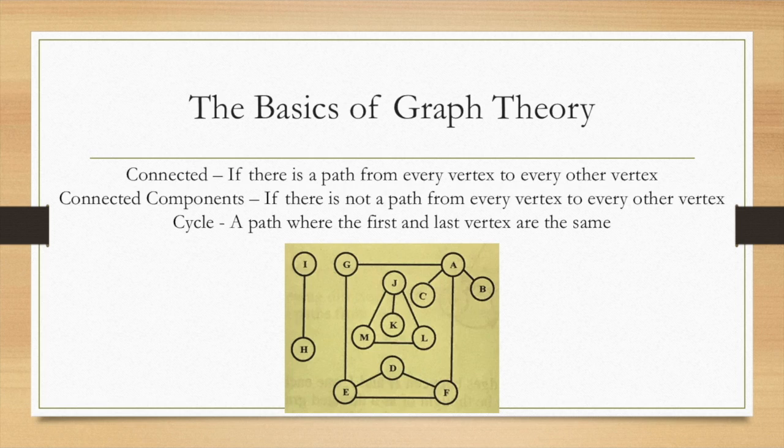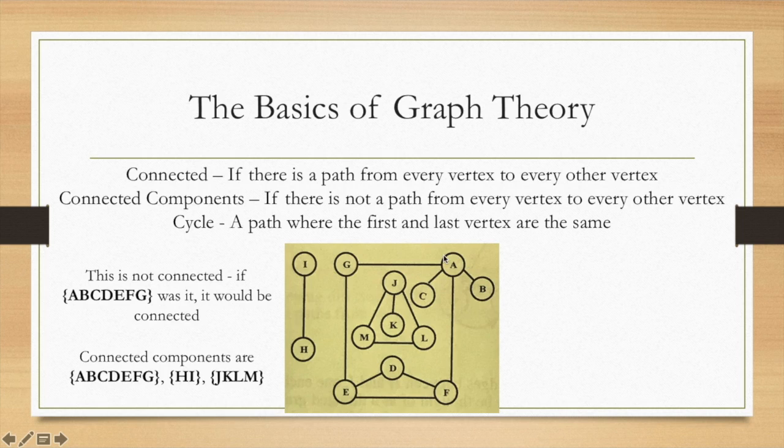Now on to connectedness and cycles. This is not considered connected, which means there's a path from every vertex to every other vertex. Say you covered up j k l m and h i and all you had was this a b c d e f g structure. Then that would be a connected graph. However this is called connected components because there are different components and they are connected but they're not all connected together. Lastly we have a cycle where a path has the same first and last vertex. So g a g is considered a cycle. Similarly g a f e g or a f d e g a is a cycle.